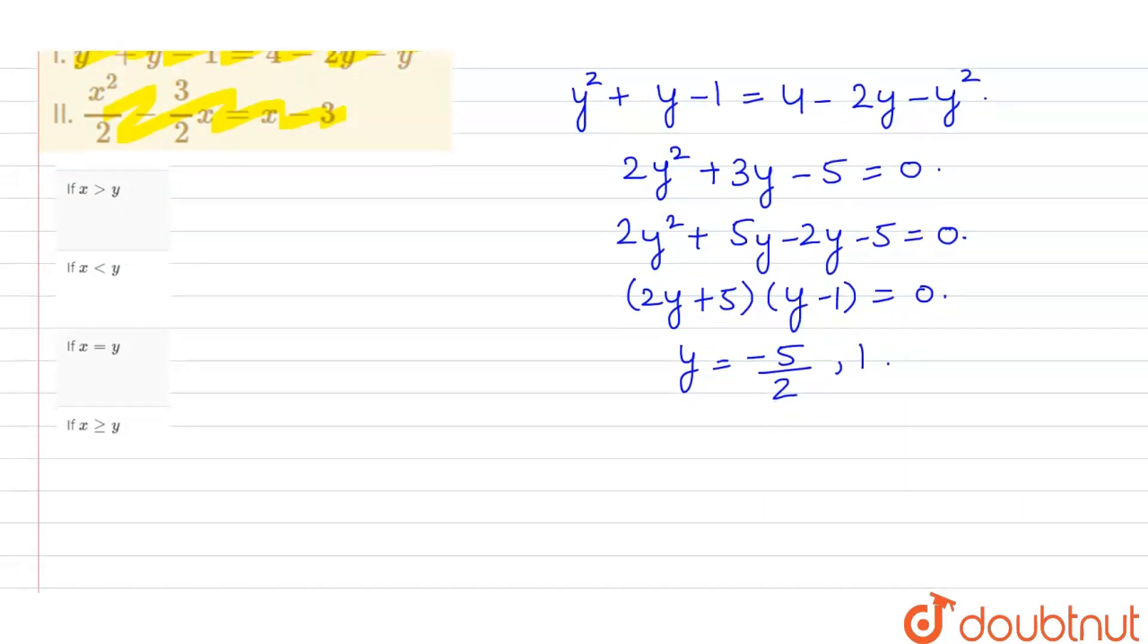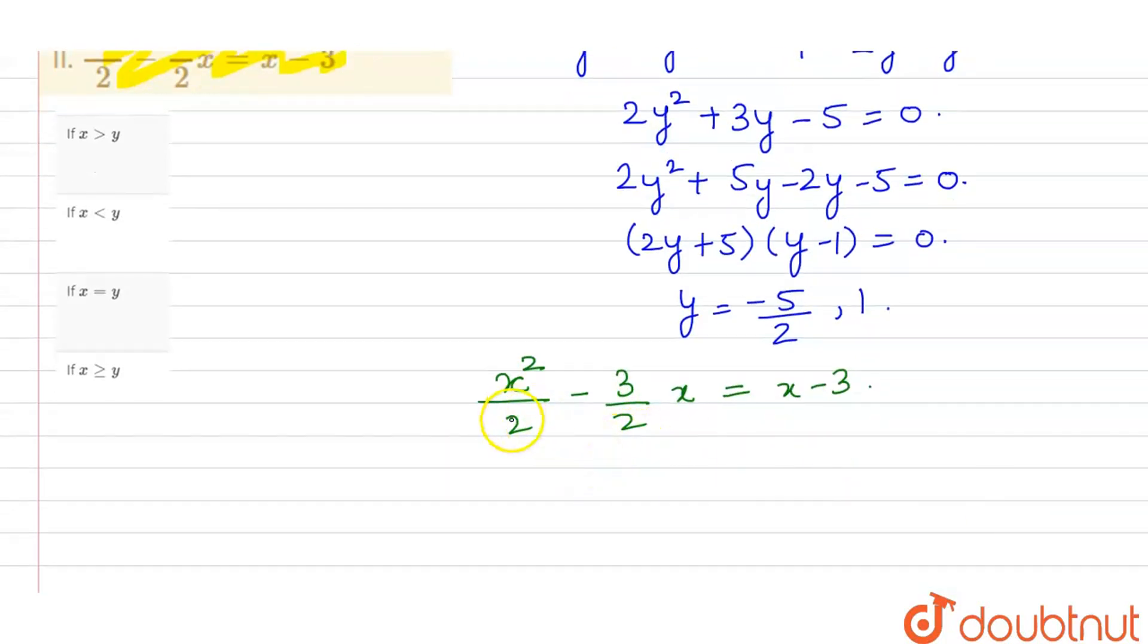Now, let's solve the second equation. It is x²/2 minus 3x/2 equals x minus 3. Here we will solve. x² minus 3x equals 2x minus 6.